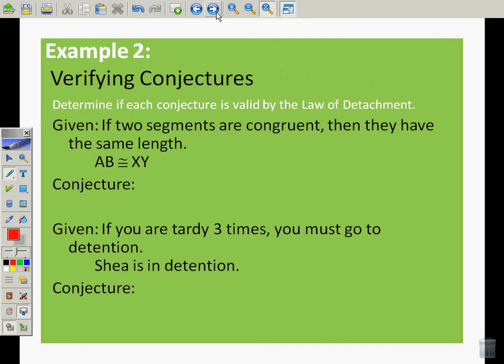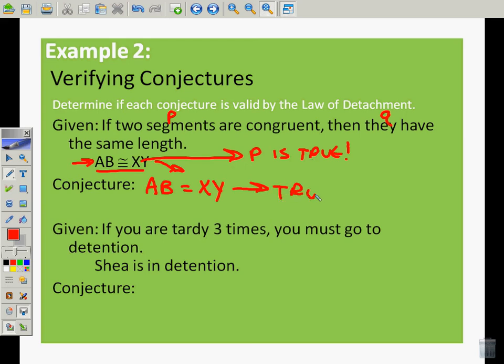Determine if each conjecture is valid by the law of detachment. If two segments are congruent, then they have the same length. My conjecture would be that AB is equal to XY, because they told me also this: AB is congruent to XY. So I would imagine that AB is the same length as XY. Well, let's figure out if this is true. If two segments are congruent, they have the same length. We said that they are then congruent. So this is P, this is Q. We said that P is true. So therefore, this must be true. The first part was true - yes, they are congruent - so then I was able to say then they must be equal.